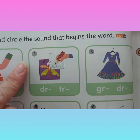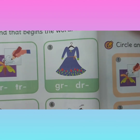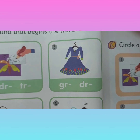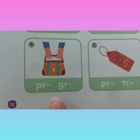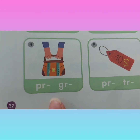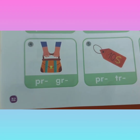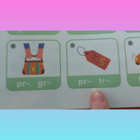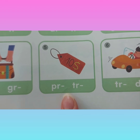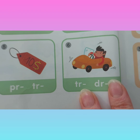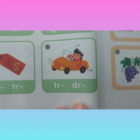Make a circle around the correct beginning sound. Number 3: dr — trace. Number 4: gr — grab. G plus R makes the sound gr. Number 5: pr — price. And our last one, number 6: make a circle around the beginning sound dr.